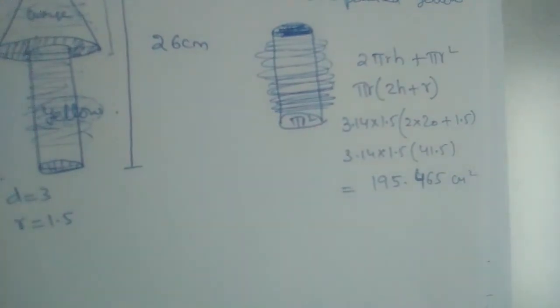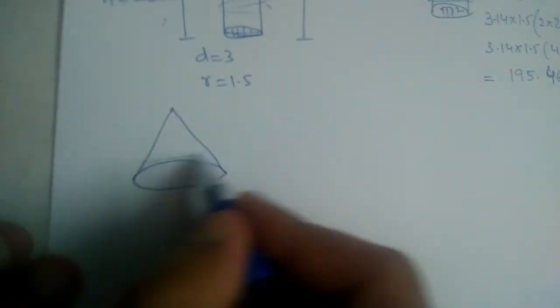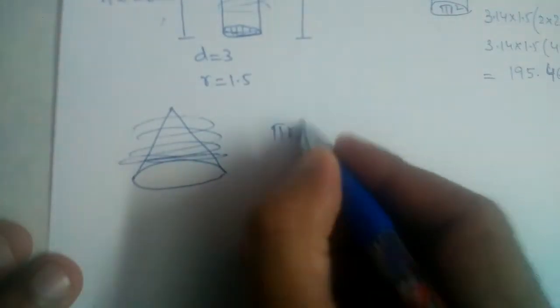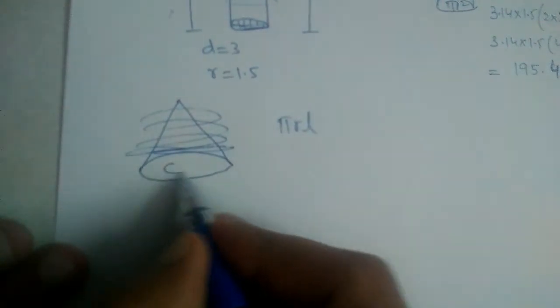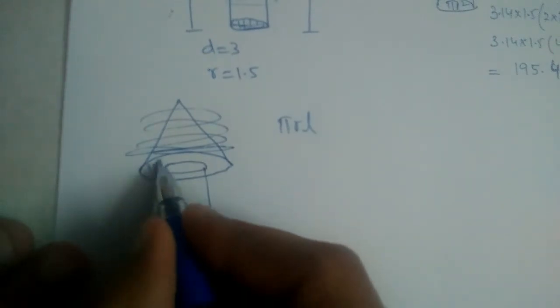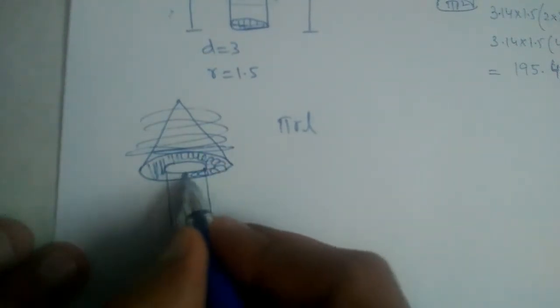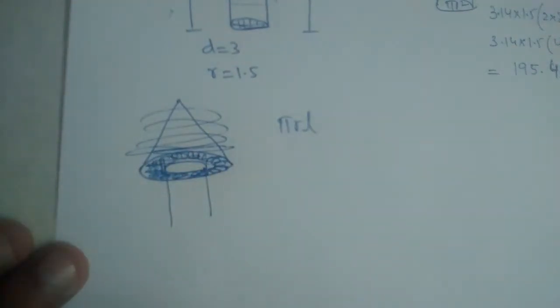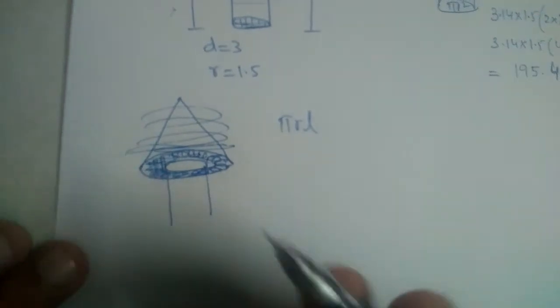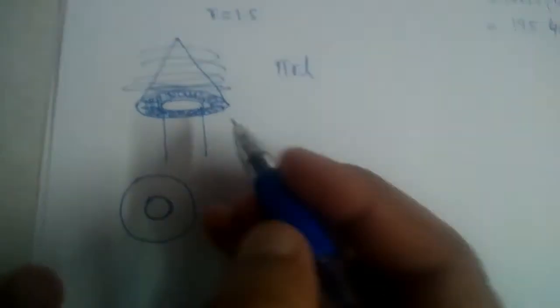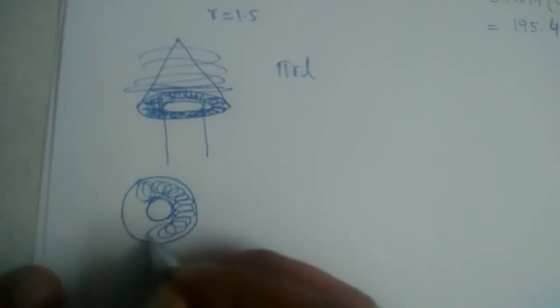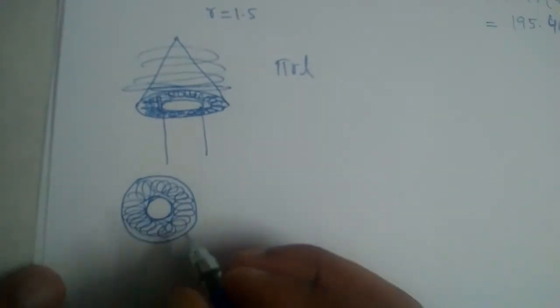Now let us find the orange area — this is a little tricky. The curved surface area of the cone (πrl) will be painted orange, but we also need to paint the ring at the base of the cone. Students often forget this part. If you view the cone from the bottom, you see a large circle (cone base) and a small circle (cylinder base), forming a shaded annular region.